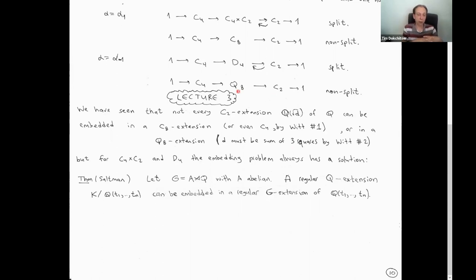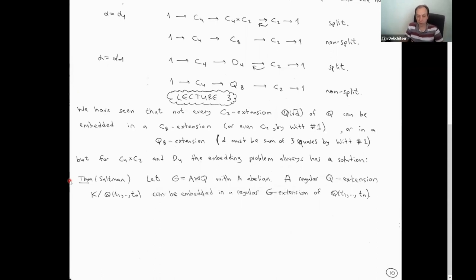It turns out it's not a coincidence that it's these two groups — C8 and Q8 — for which the embedding problem is obstructed. And it turns out that when you have a split extension, so when you're looking at a split extension of a group by an abelian group, then the embedding problem always has a solution. So you can always lift a Q extension to a G extension. So this is what I'd like to talk about. I think this theorem was rediscovered a few times and appears in different sources.